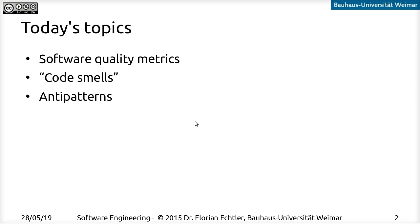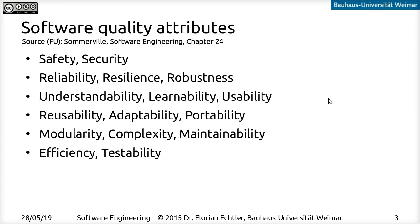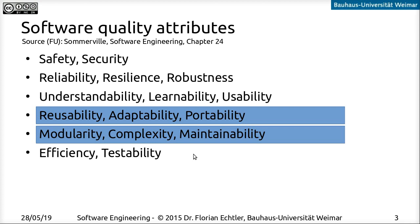First, let's look at what attributes we can use to describe the quality of software. There are quite a number of them: safety and security, resilience, understandability and learnability, usability — the user-facing aspect — reusability and portability, modularity and complexity — which influences how well software can be maintained — and last but not least, how efficient the software is and how well it can be validated.